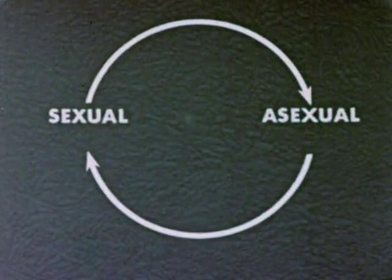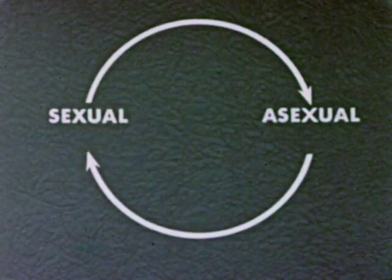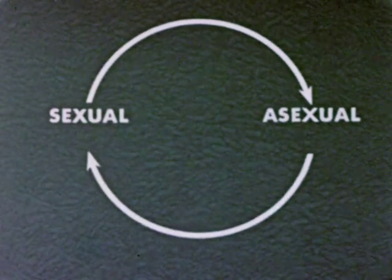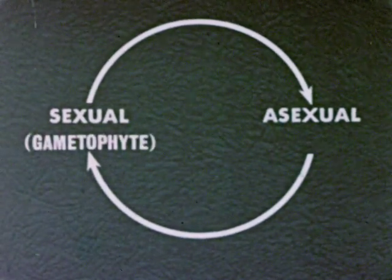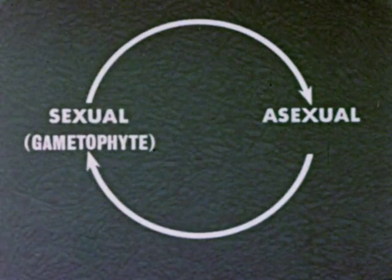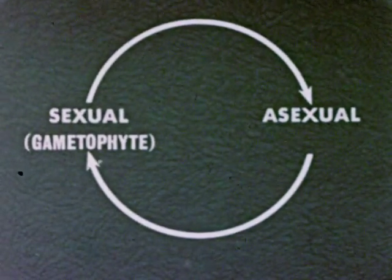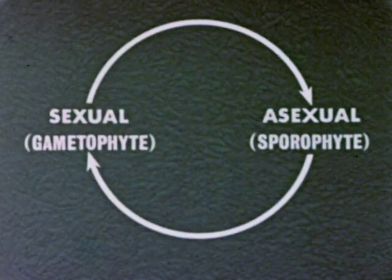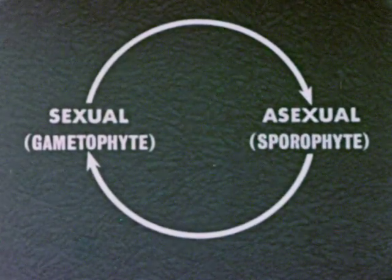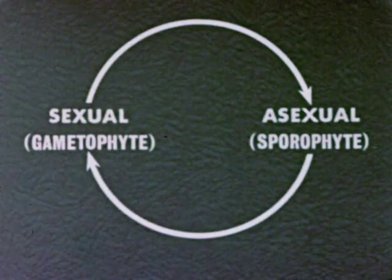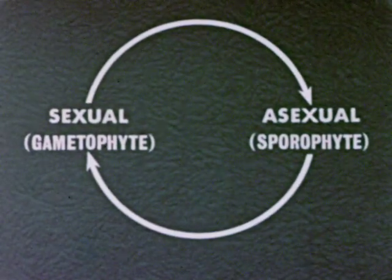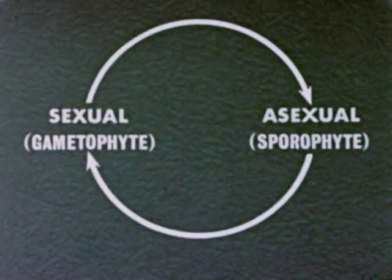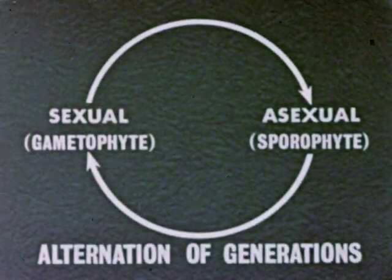Liverworts reproduce by sexual, then asexual means. The sexual stage, a multicellular gametophyte, has gametes or sex cells. The asexual stage, a multicellular sporophyte, has spores. Alternation between sexual and asexual reproduction, between gametophyte and sporophyte, is called alternation of generations.